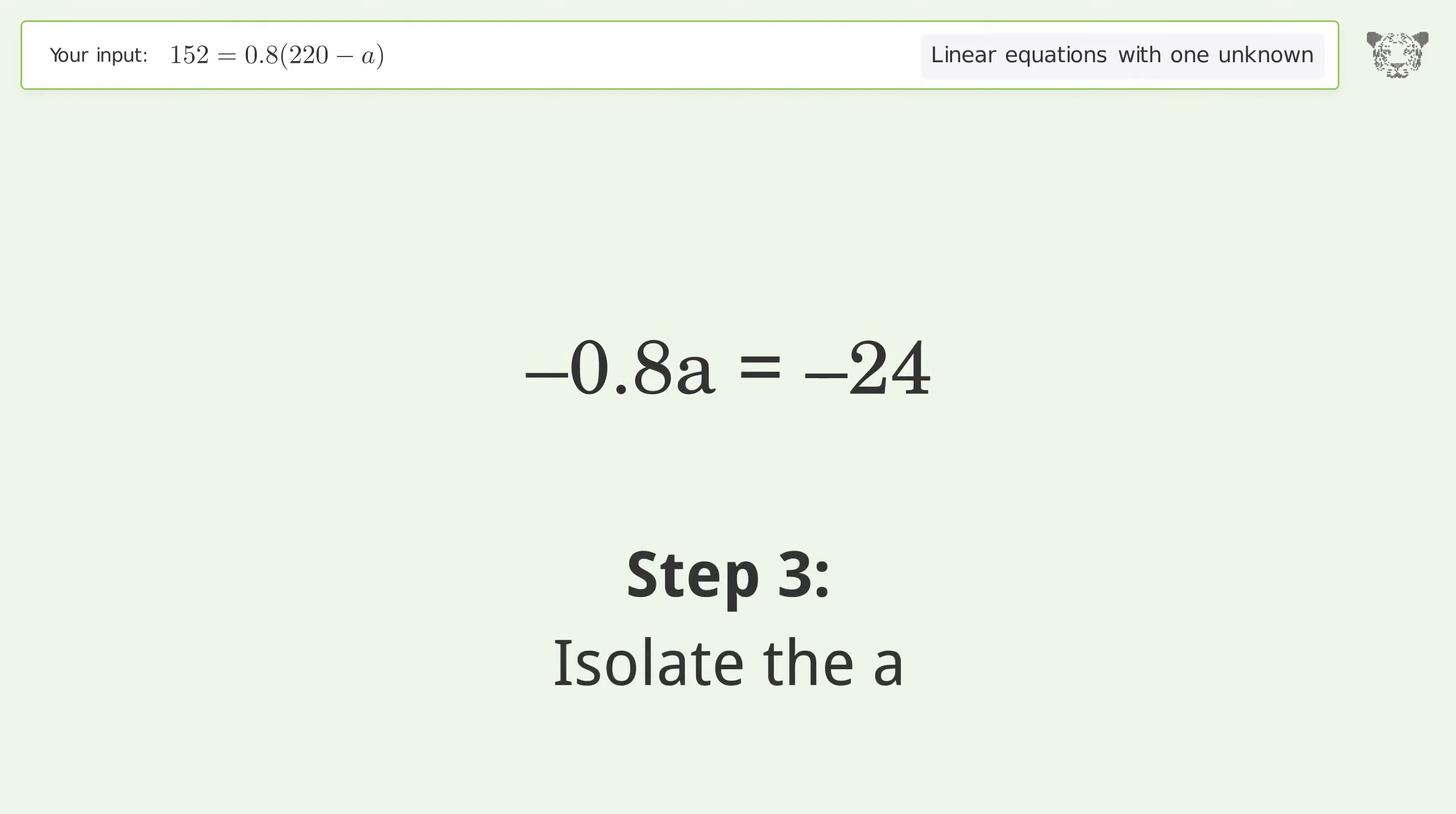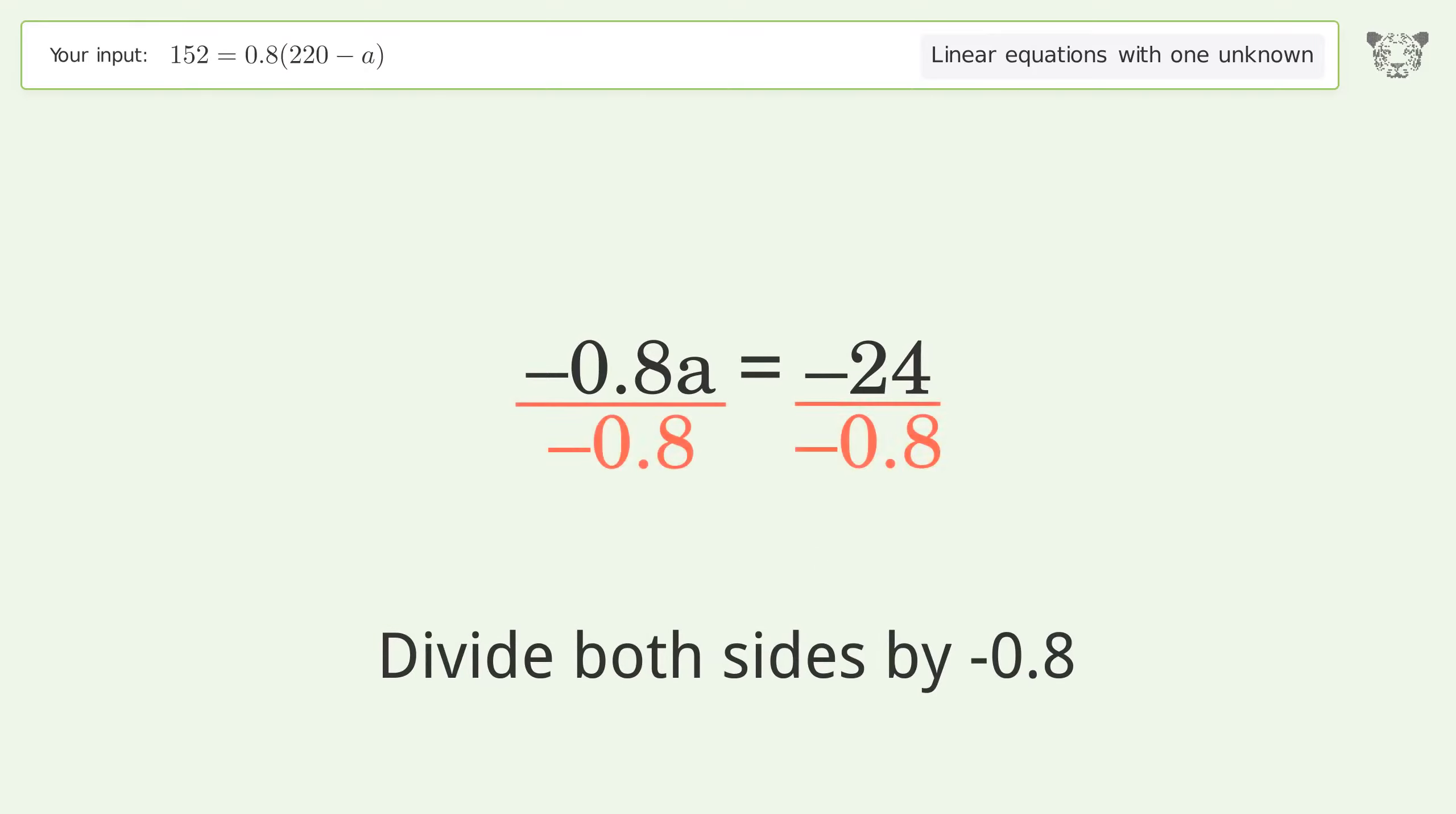Isolate the a. Divide both sides by negative 0.8. Cancel out the negatives.